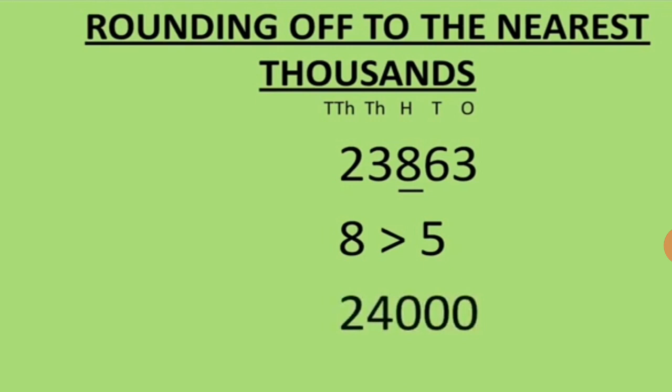So we add 1 at the thousands place, making it 4. At the hundreds, tens, and ones places the numbers will become 0, and at the ten-thousands place the number will remain the same. So we got 2, 4, 0, 0, 0 — that is 24,000.